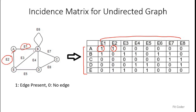Similarly for B: B is connected with E1, E3, E4, E7, and E6, so all those entries are 1 for B and the remaining are 0. C is connected with E7 and E8, so for C those entries are 1. In this manner we can fill the incidence matrix for our graph.